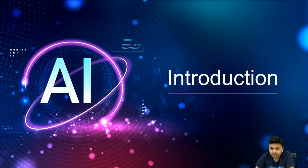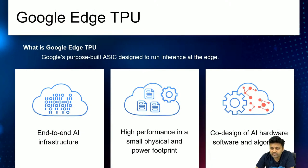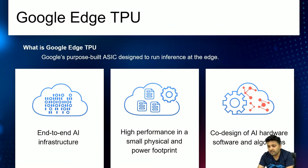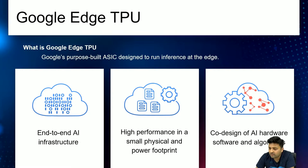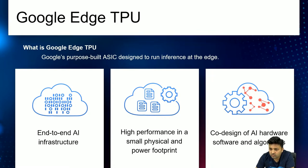So what is a TPU? TPU is Google Edge TPU — it's Google's purpose-built ASIC, an application-specific IC designed to run inference at the edge. It's specifically designed for doing AI inference on the edge. It provides end-to-end AI infrastructure with high performance in a very small physical power footprint, and it's purpose-built specifically for AI hardware and software algorithms.